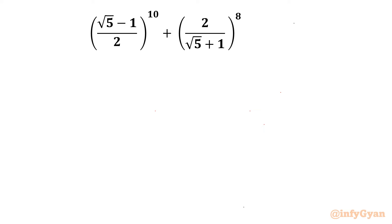Welcome back to Infigyan, my dear friends. Today in this video we are going to take up another challenging question from Math Olympiad Simplification. It is (√5 - 1)/2 whole power 10 plus 2/(√5 + 1) whole power 8. So let's get started by writing the given expression as E.